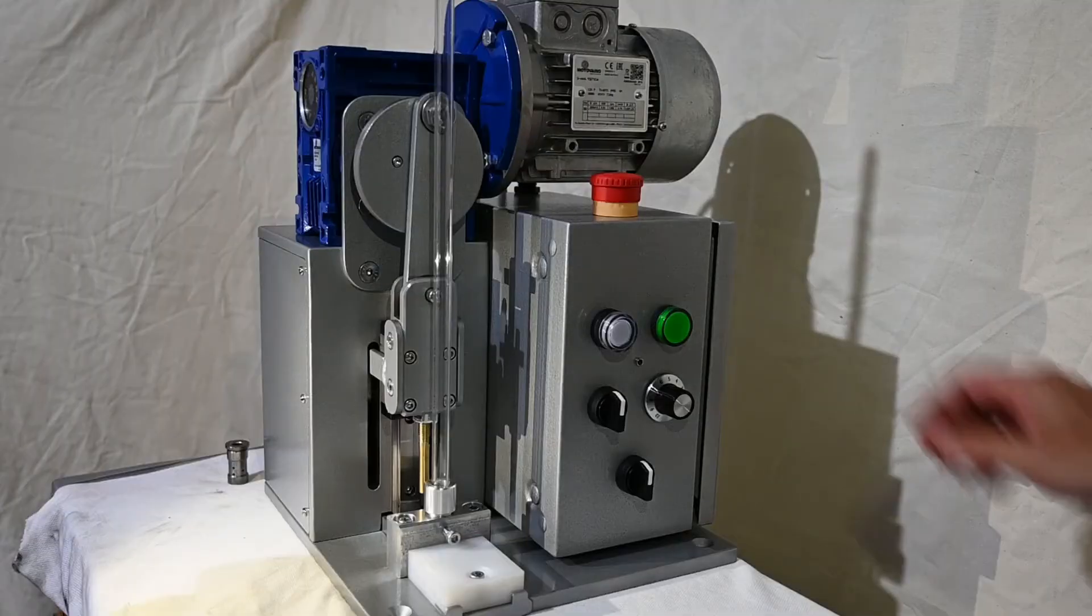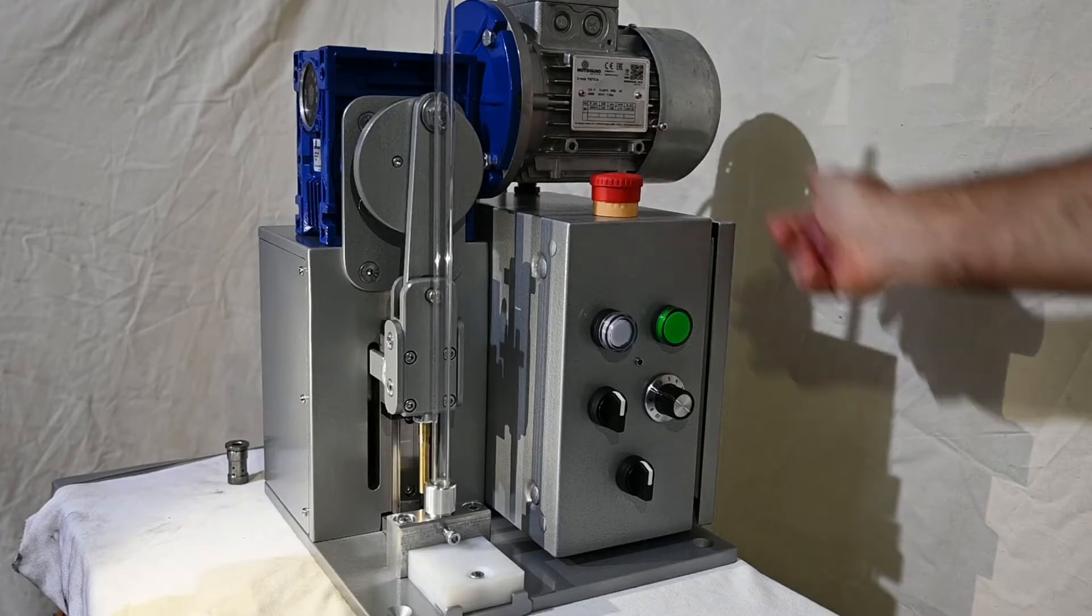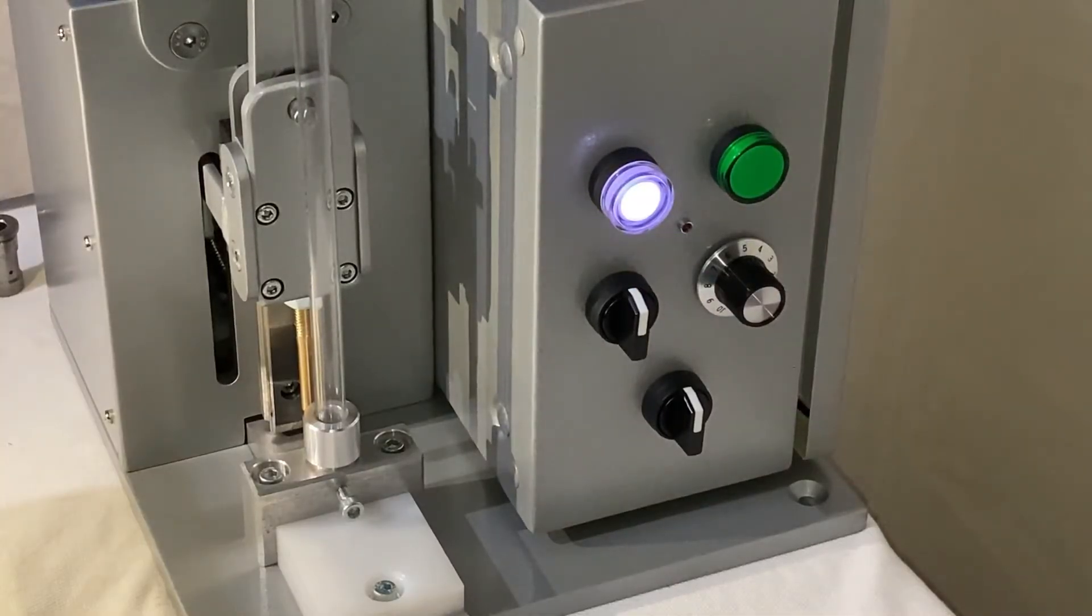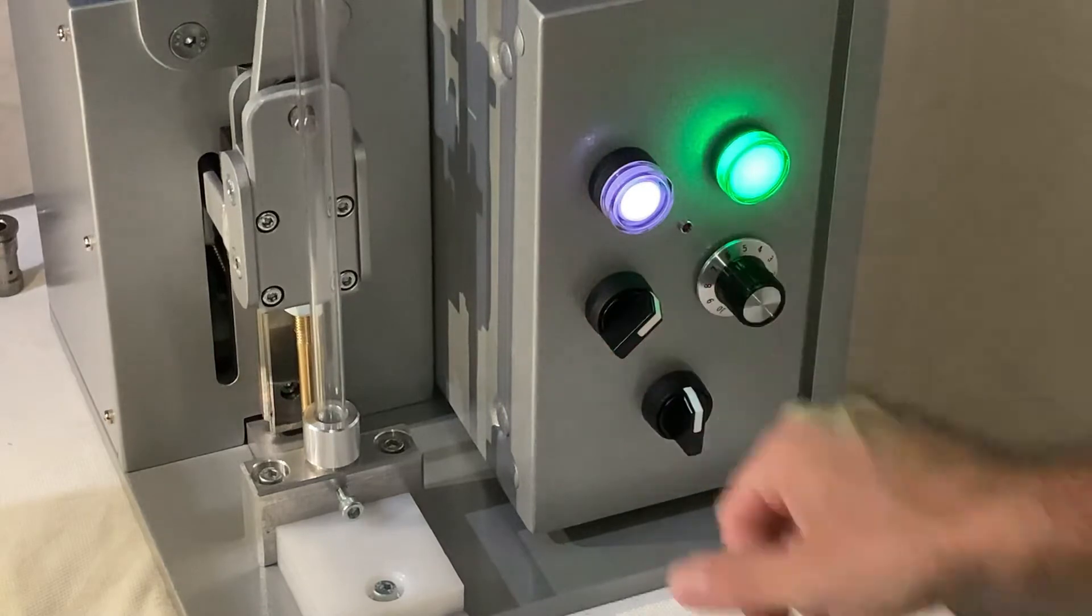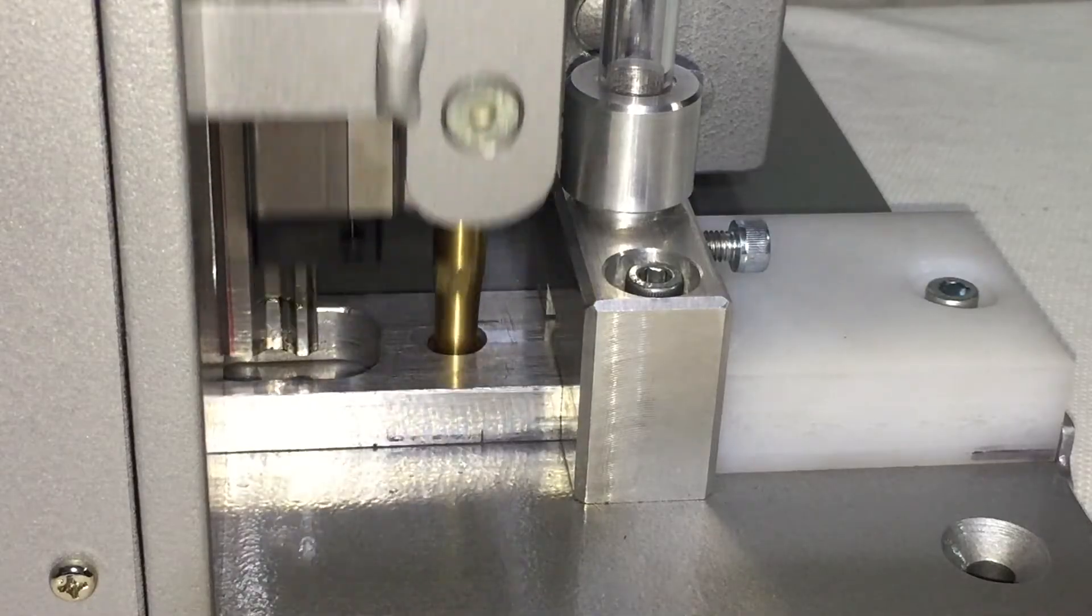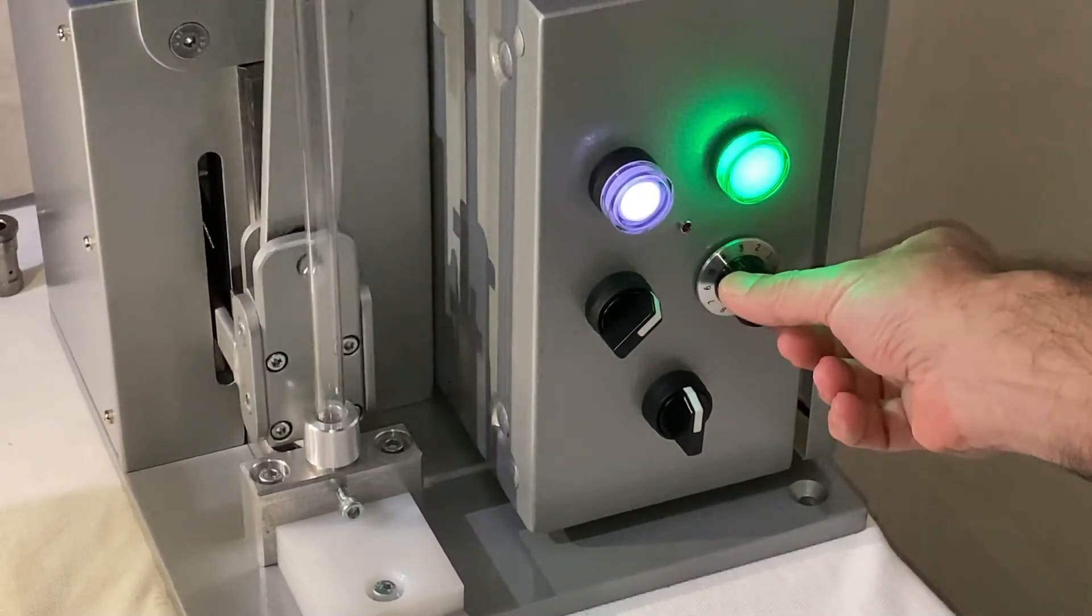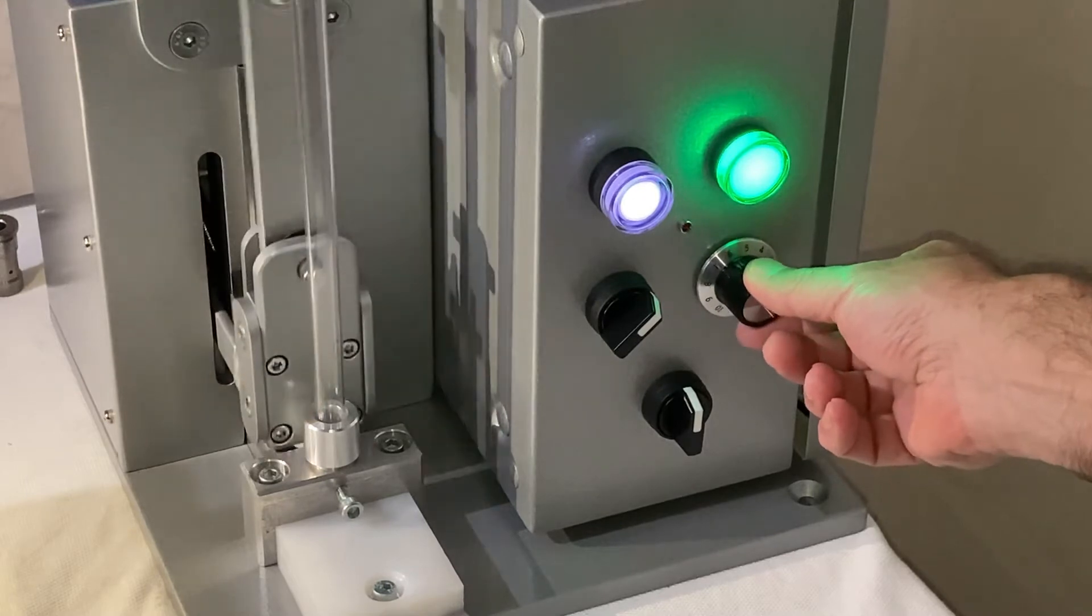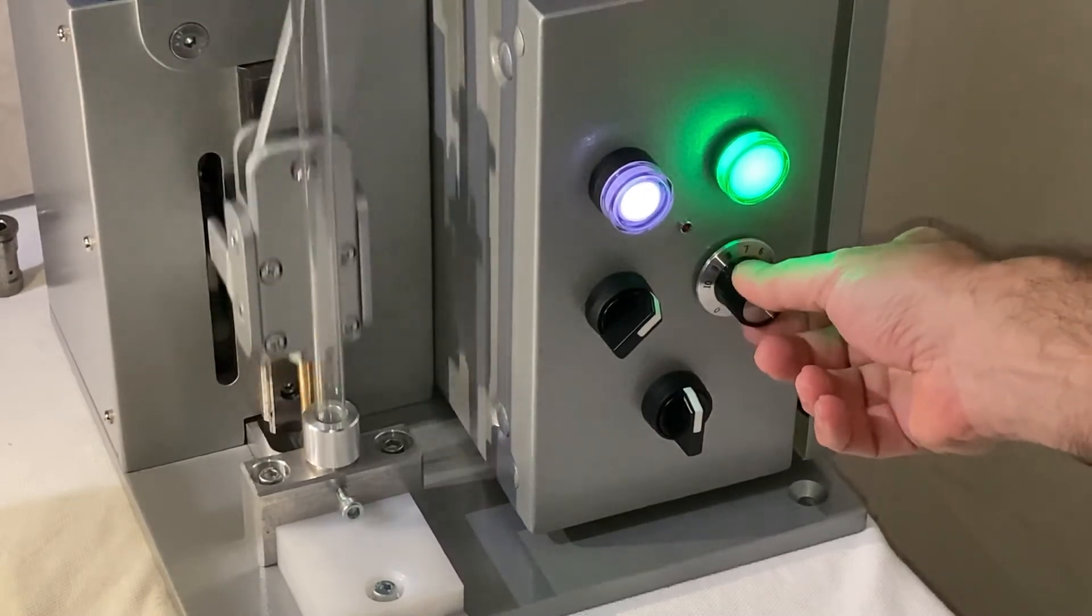To start the machine, make sure your e-stop is reset, then press the power button. There's a variable frequency inverter drive, it takes a few seconds to boot up. To run the machine, use the potentiometer to increase or decrease the speed, which is handy depending on the type of projectile you're resizing.